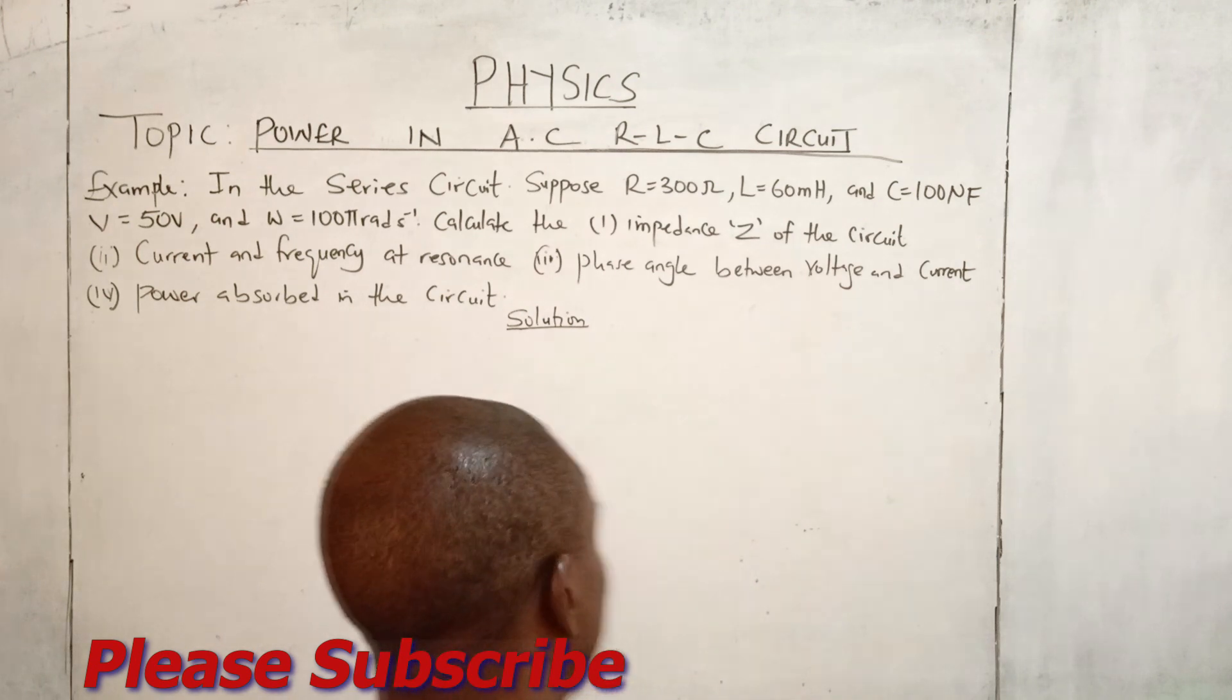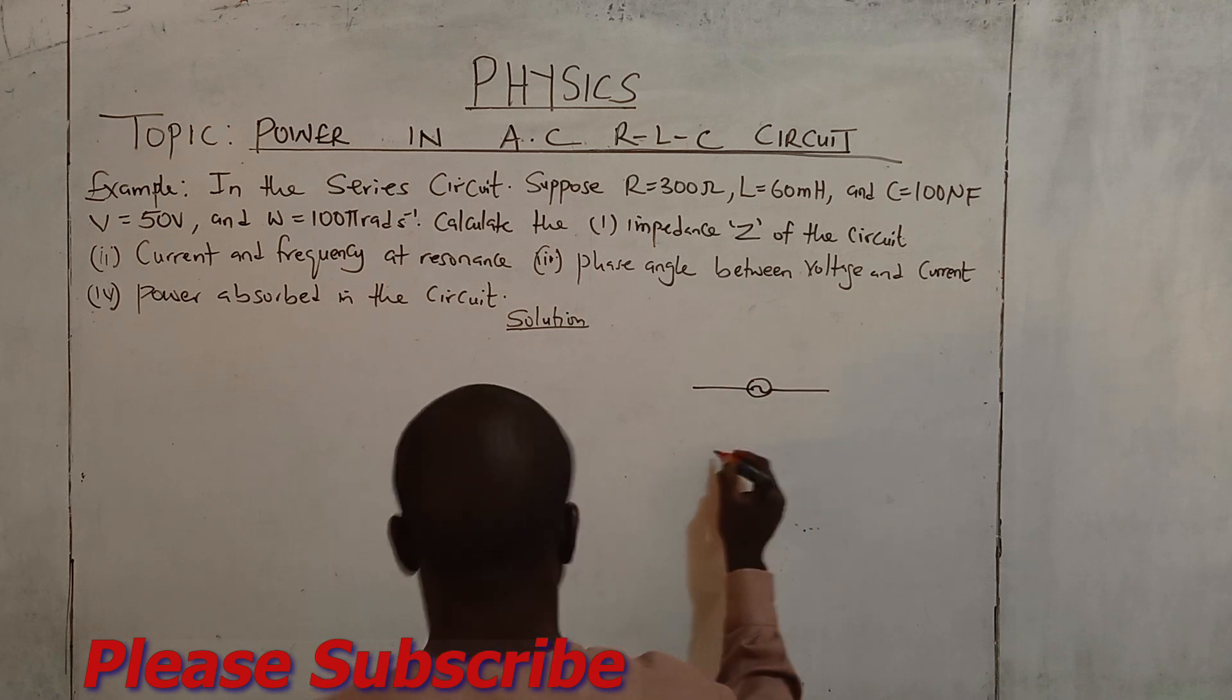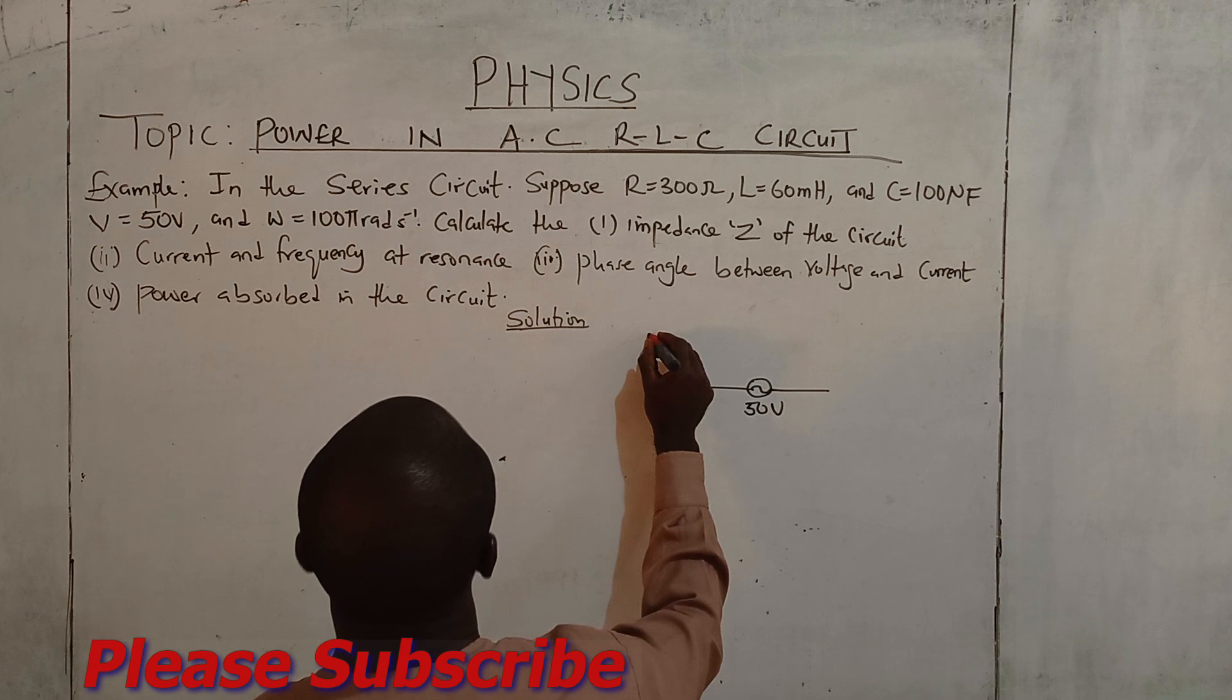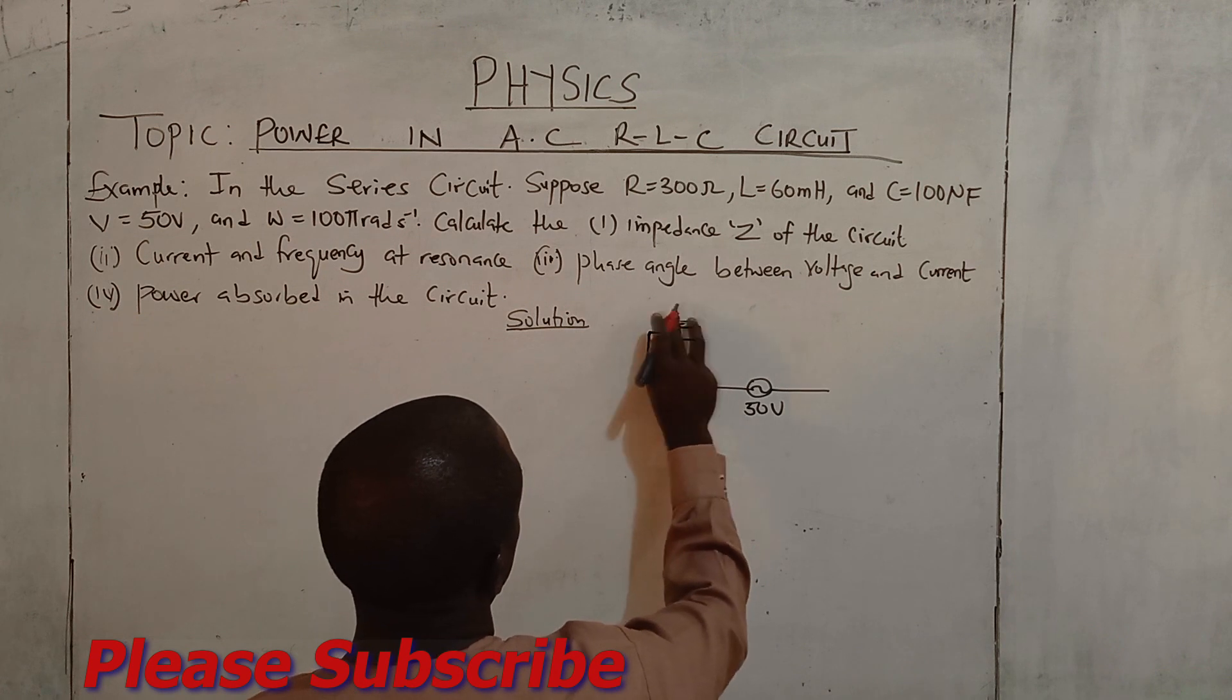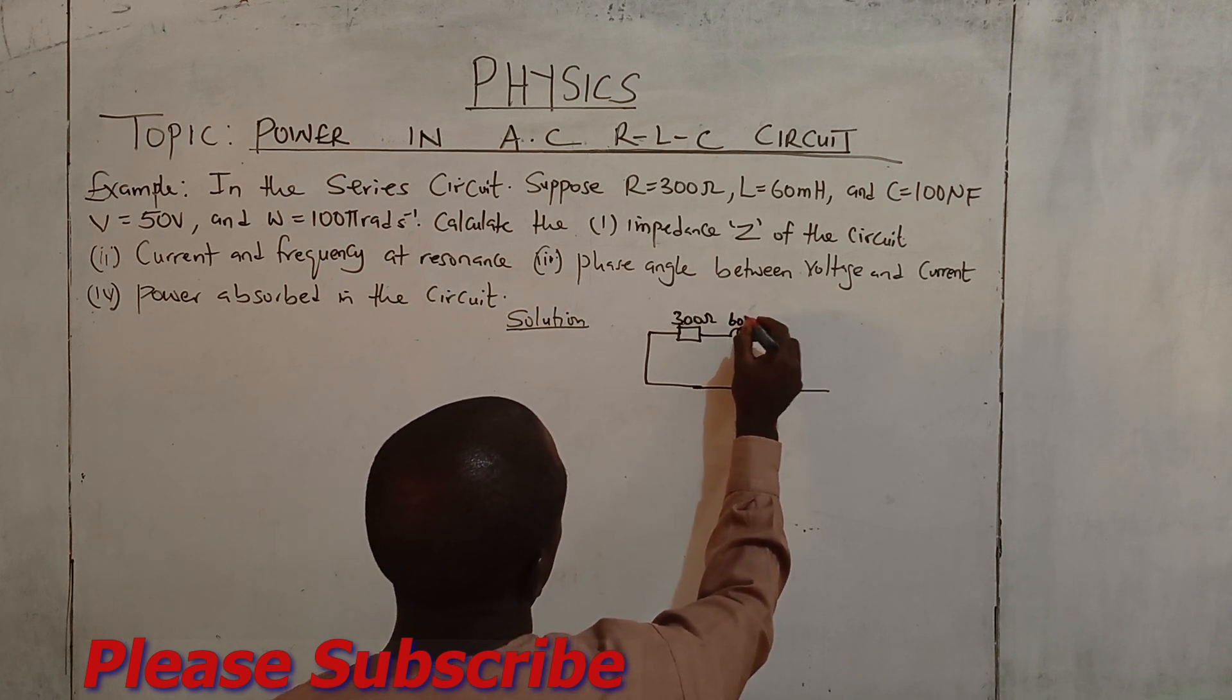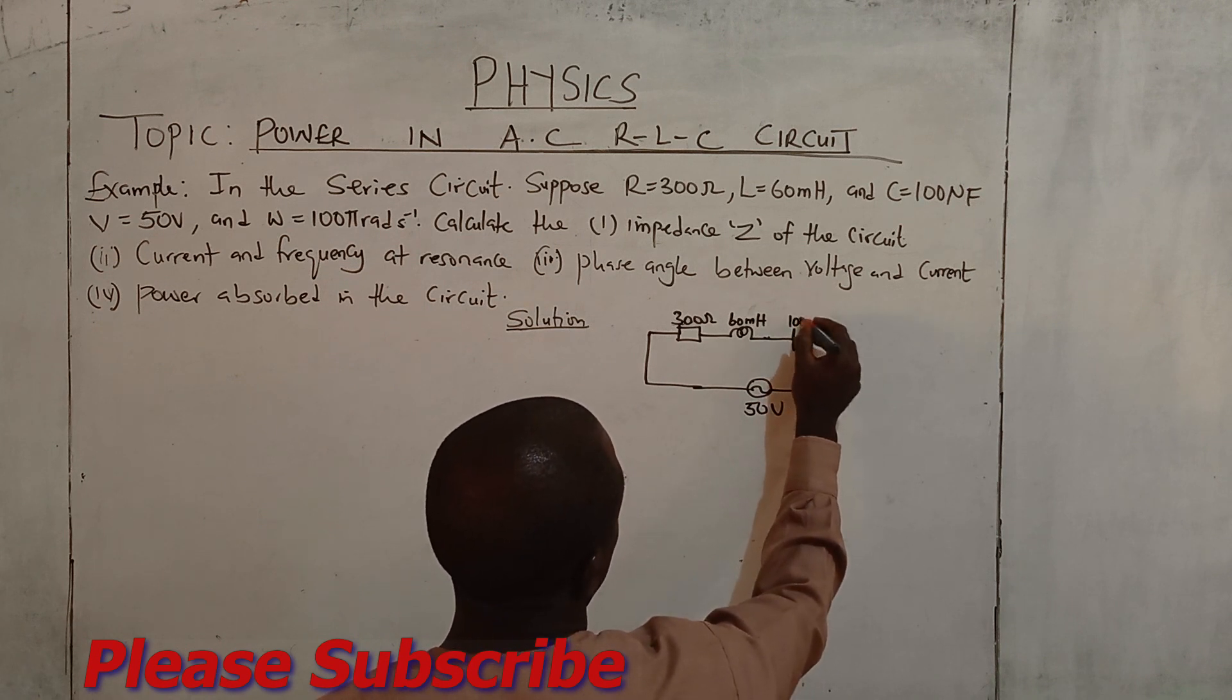The first thing to do is to draw the diagram to illustrate the equation and the circuit. That is supply AC source, which is 50 volts. It is a series resistance, 300 ohms, connected to the inductor 60 millihenry, capacitor 100 microfarad.